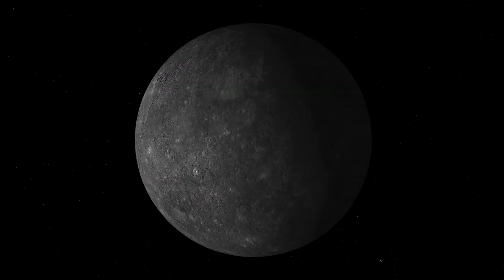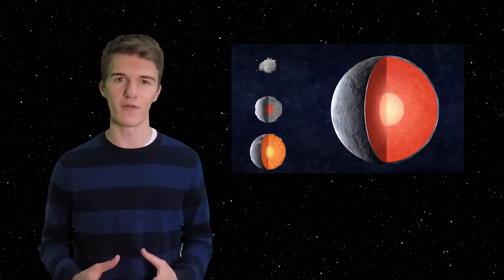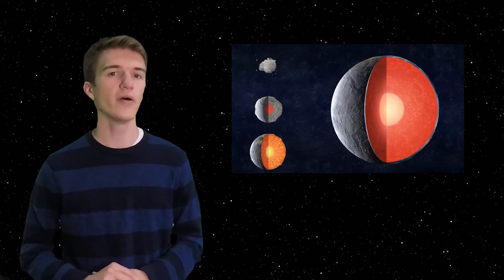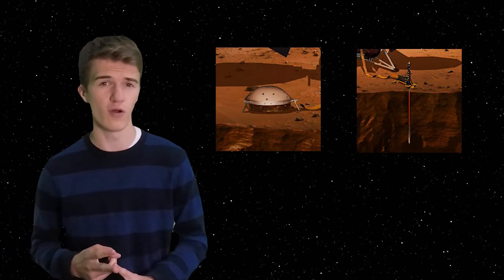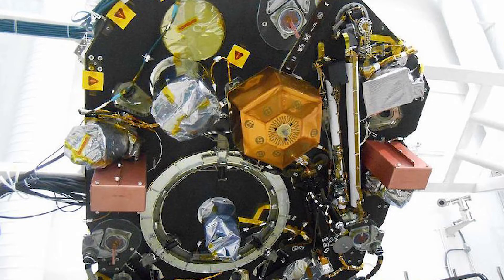So how is InSight going to actually understand how Mars formed 4.5 billion years ago? Well, it has three main science experiments. The first one being a seismometer, the second one being a heat flow probe, and the third one being a radio science experiment.